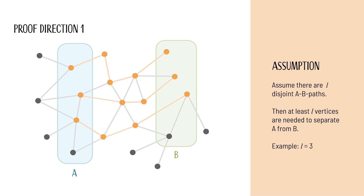If L-1 vertices are removed from the graph, these come from at most L-1 disjoint paths. This means that at least one path remains unaffected by the removal. Thus, at least one path still exists.